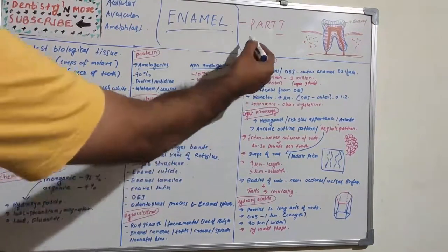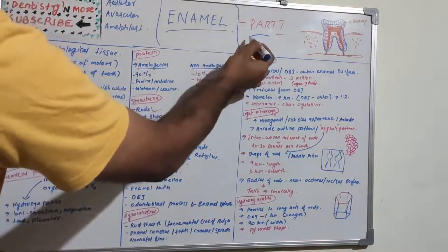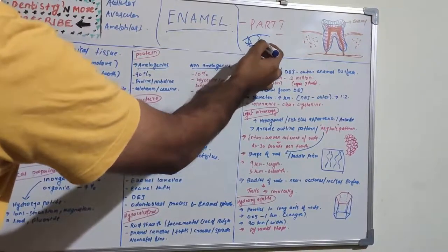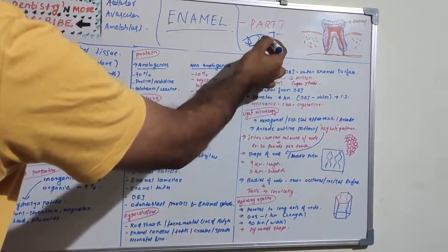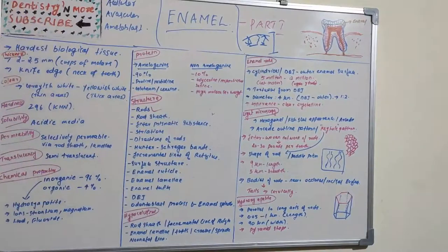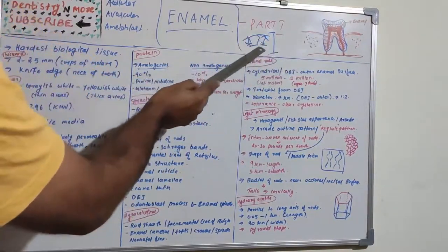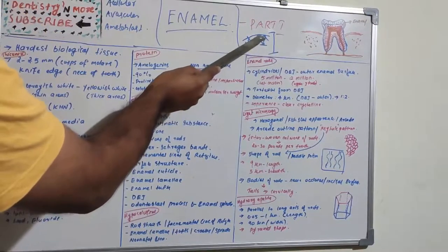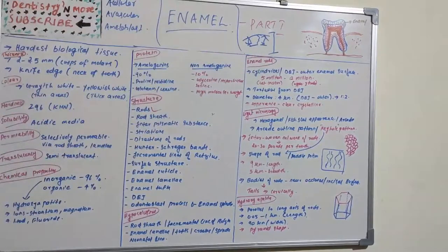The length of enamel rods is greater than the thickness of enamel because of their tortuous course. Since they do not go in a straight line, if you straighten the tortuous path, the length will be more than the total thickness of enamel. Therefore, the length is always greater than the enamel thickness.